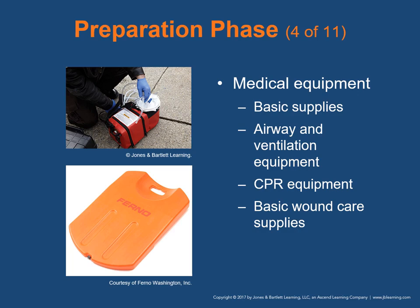Ambulance services that undertake runs lasting longer than one hour should consider disposable single-use humidifiers. You also need a CPR board that provides a firm surface under the patient's torso and establishes an appropriate degree of head tilt. If unavailable, use a long or short backboard. Use a tightly rolled sheet or towel to raise the patient's shoulder three to four inches — do not use the roll to hyperextend the neck if you suspect a spinal injury. Basic wound care supplies include trauma shears, sterile sheets, sterile burn sheets, adhesive tape in several widths, self-adhering soft roller bandages, sterile dressings, gauze, abdominal pads, occlusive non-adherent dressings, adhesive bandages, and tourniquets.